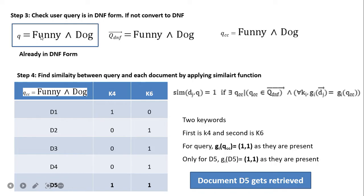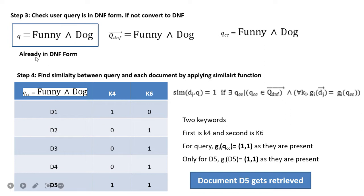We start with a simple query: 'funny AND dog.' We require to retrieve documents in which both the 'funny' and 'dog' keywords appear. Since the query is already in DNF form, it is represented as q_dnf = funny AND dog. It has only a single part, so it is represented as qcc = funny AND dog. We now find the similarity between the query and each document using the similarity function. 'Funny' and 'dog' correspond to keywords k4 and k6.